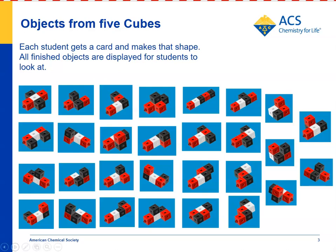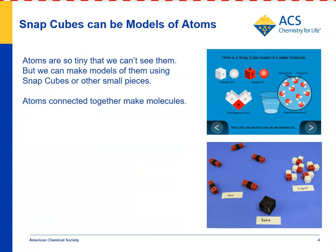It's pretty amazing that only five cubes, rearranged in different ways, can make 29 different shapes. You can take this activity a step further and talk to students about how these little snap cubes can be models of atoms — that atoms are the smallest pieces that everything is made of, whether it's a solid, a liquid, or a gas. You can show students an animation that uses snap cubes as models of atoms.